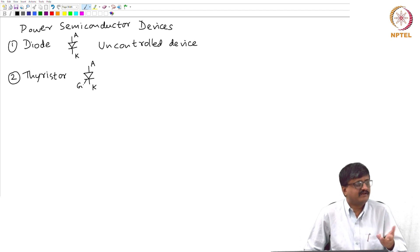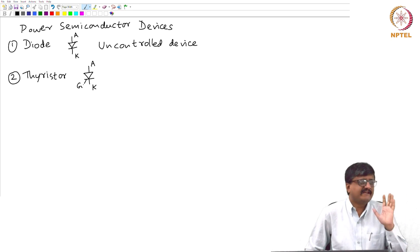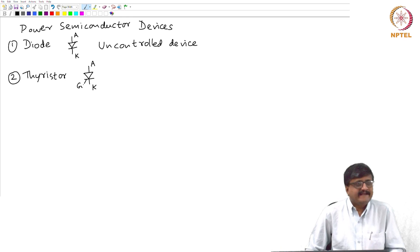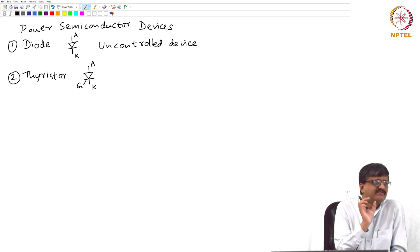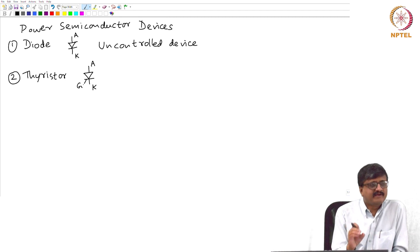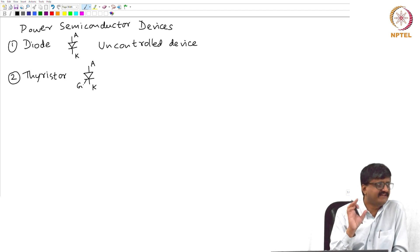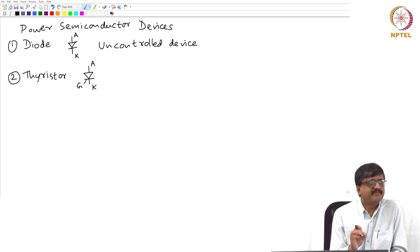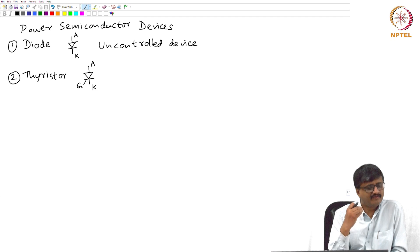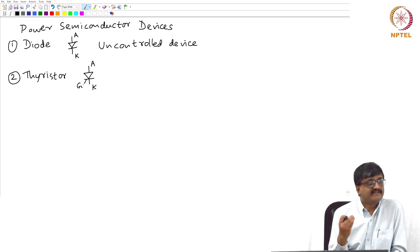Similarly, whenever the diode or thyristor is off, there is a very negligible current — we ignore it and say the current is 0. Suppose you give a gate signal to a thyristor when it is in the forward biased state; it will go from off state to on state. There is a certain non-zero time taken, but we assume an ideal device and say the time taken is 0 — it is instantaneous. Similarly, the time taken to go from on state to off state is also 0. Essentially we are neglecting losses: both conduction loss and switching loss are neglected.